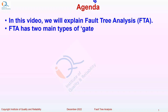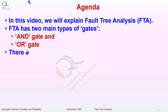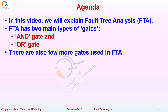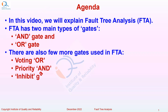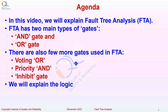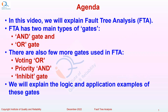FTA has two main types of gates: the AND gate and the OR gate. There are also a few more gates used in Fault Tree Analysis — the Voting OR gate, the Priority AND gate, and the Inhibit gate. We will explain the logic and application examples of these gates in Fault Tree Analysis.